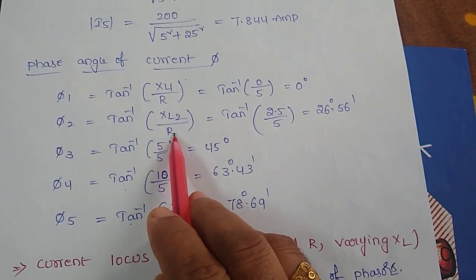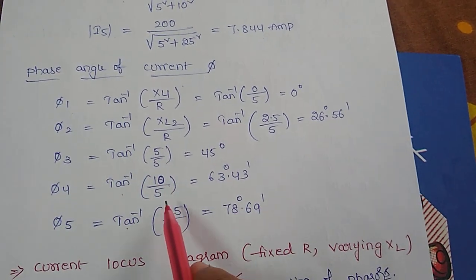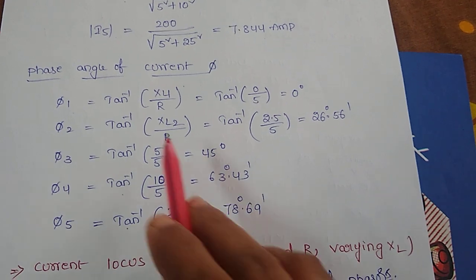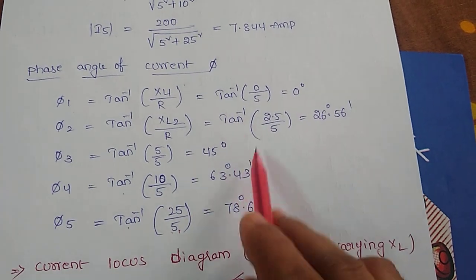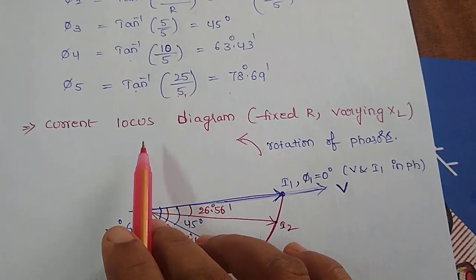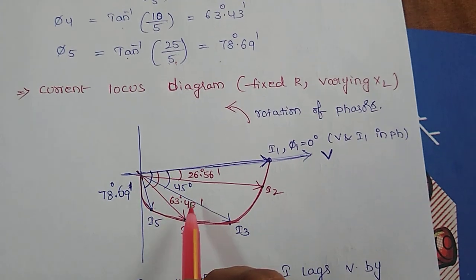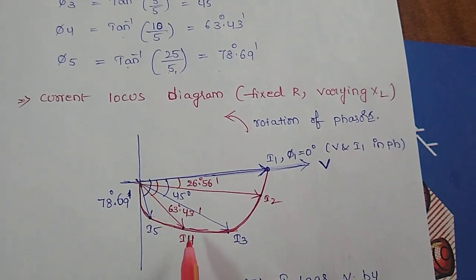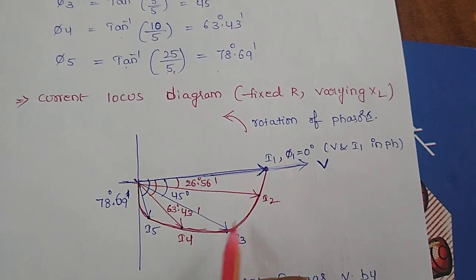XL2 by R, where R value is fixed, always R value is 5, it remains constant. XL value is changing, so that I got different values of phase angles.